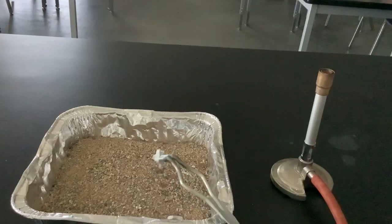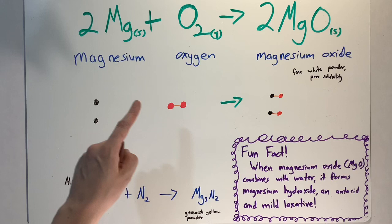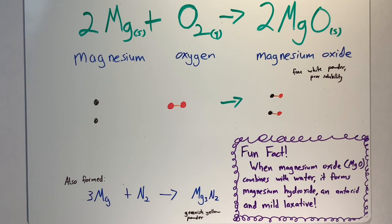So here we have the equation for this reaction. 2Mg plus O2 makes 2MgO. So two atoms of magnesium plus one O2 molecule rearranges and makes 2MgO, or magnesium oxide atoms.